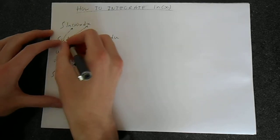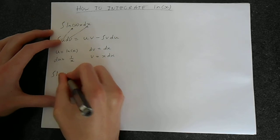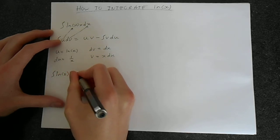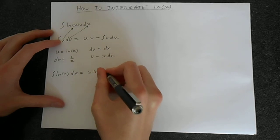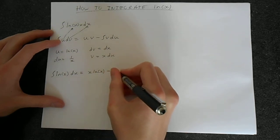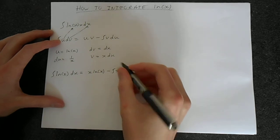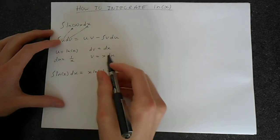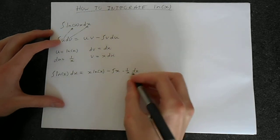So we can now write u dv. This is our integral of ln x dx equals x ln of x minus the integral of x times 1 over x. So v is x, and du is 1 over x, dx here.